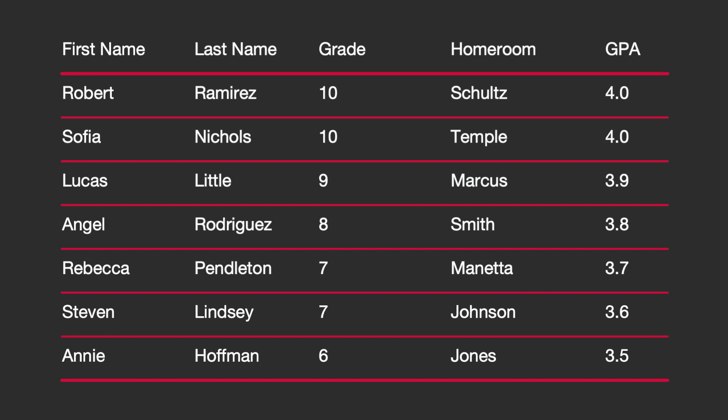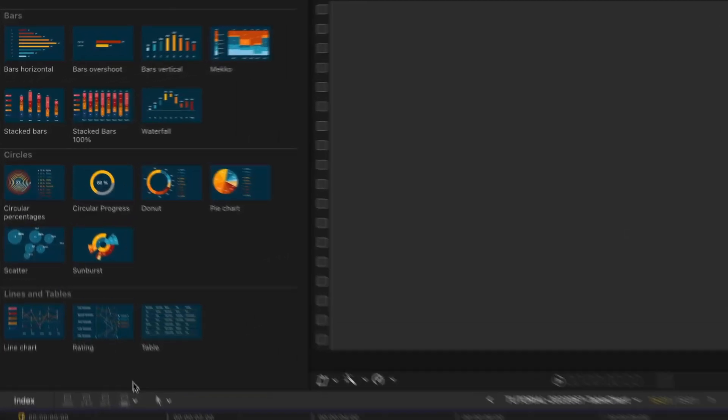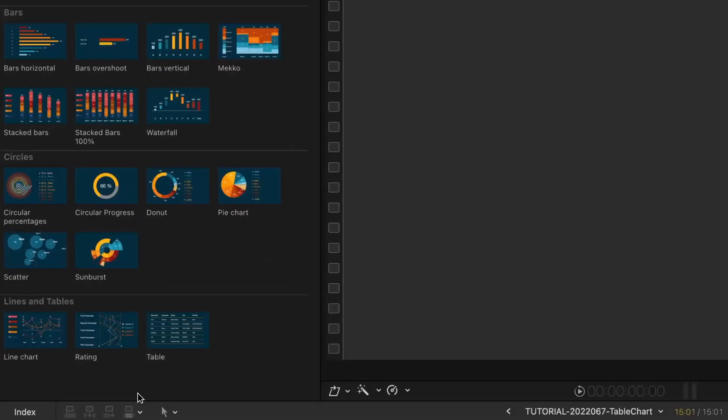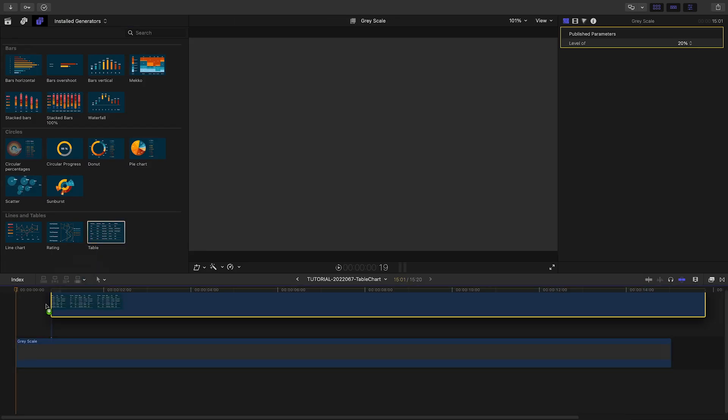Let's create our chart. The Reckon Charts presets are located in the Generators browser under Reckon Charts. There are multiple line and table chart templates to choose from. I'll drag Table to my timeline.